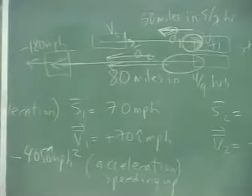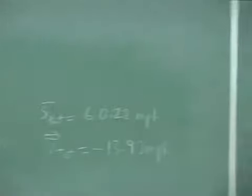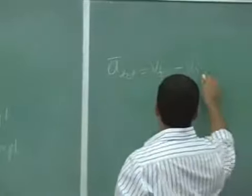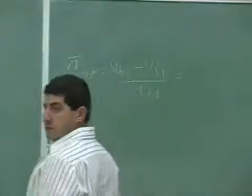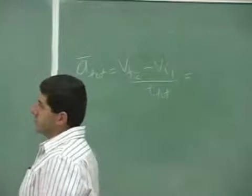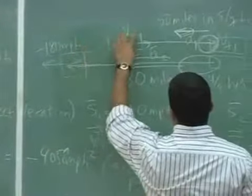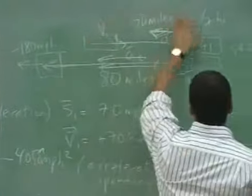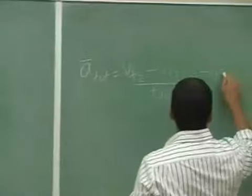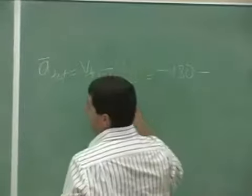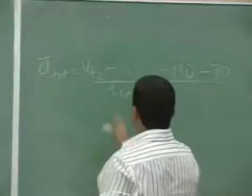The end of stage 2 minus the initial velocity at the beginning of stage 1 over the total time. So it's the final velocity, this one, negative 180 minus the initial velocity over the total time for the whole path. So that one is going to be negative 180 minus the first one was 70 over the total time.